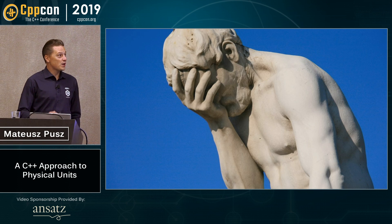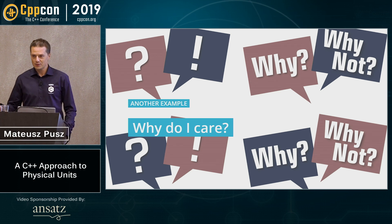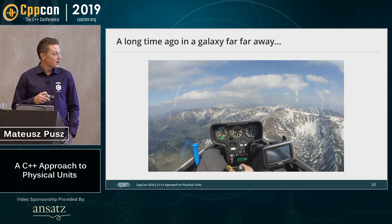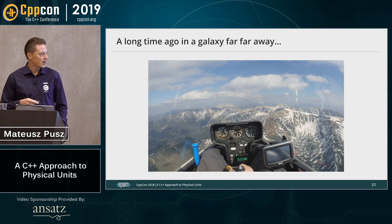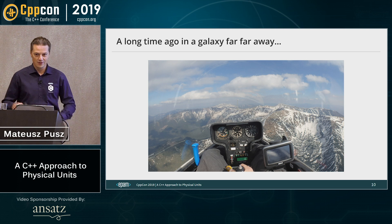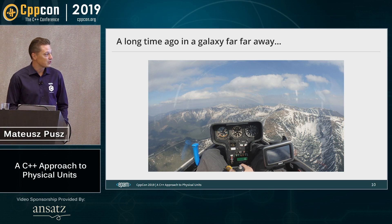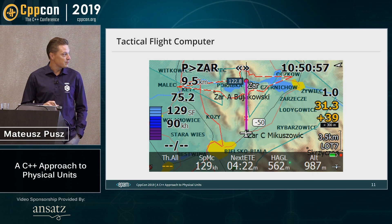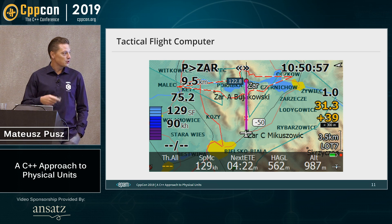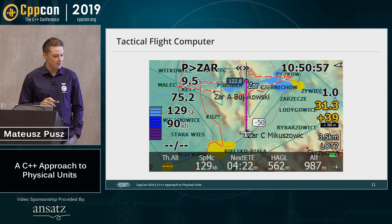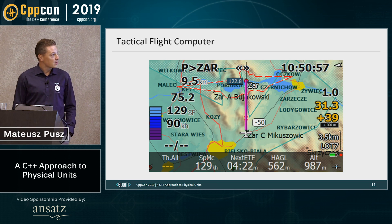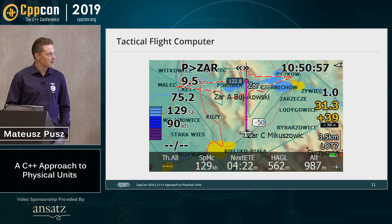But why do I personally care about this? A long time ago — about three years ago — I was a competition glider pilot. This is me flying over the mountains in my glider. You can see a small embedded car navigation system running something like Windows CE 4.0, a really old operating system. There's a software application, an open source tactical flight computer for aviation, that I contributed to. It provides the current position over the map and in real time calculates, for example, the distance you can achieve from a given altitude.